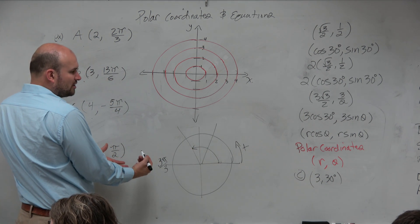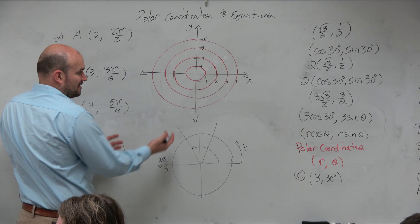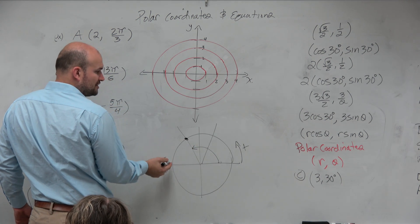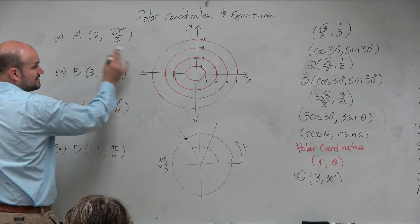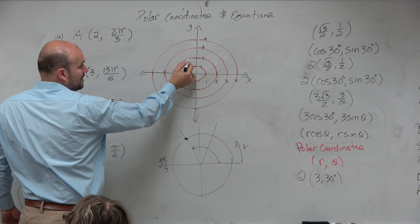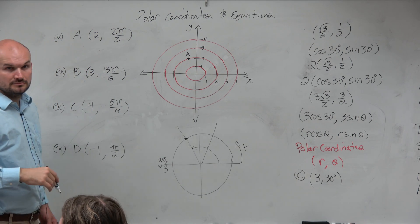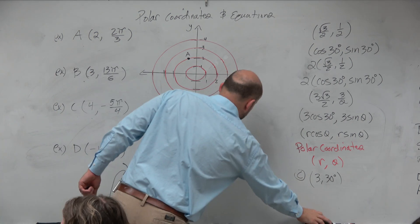So when you're sketching your coordinate point, we're going to have to estimate here. We're not going to be exactly perfect. But you can see that coordinate point on the unit circle will be there. But since we have a radius of 2, we're going to go out here and label that as A. So that is your first one.